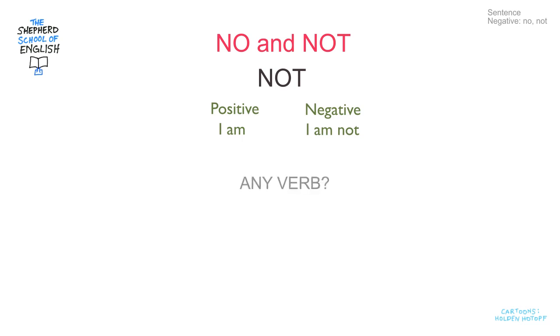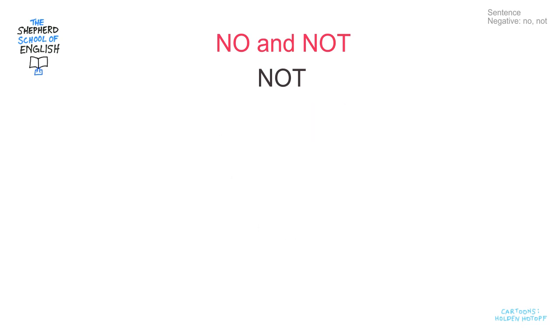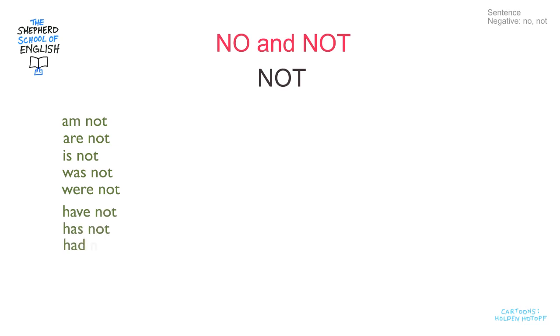Is that any verb? No it isn't. You can only use not with a small number of verbs, and here they are: am not, are not, is not, was not and were not, have not, has not and had not — and also with these verbs.